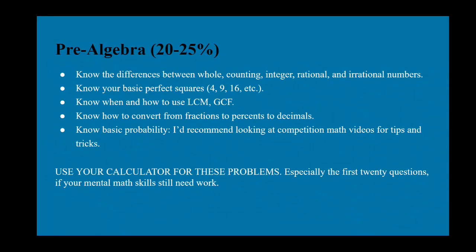Pre-algebra is 20 to 25 percent of the test. This includes knowing the difference between whole numbers, counting numbers, integers, rational numbers, and irrational numbers. Rational numbers can be written as fractions; irrational numbers like pi cannot. You should also know which categories include negative numbers, which include decimals, and which include zero.